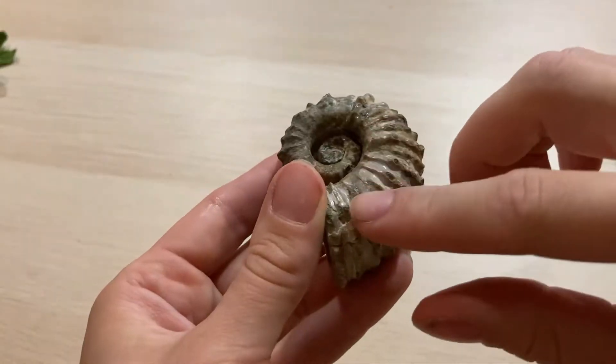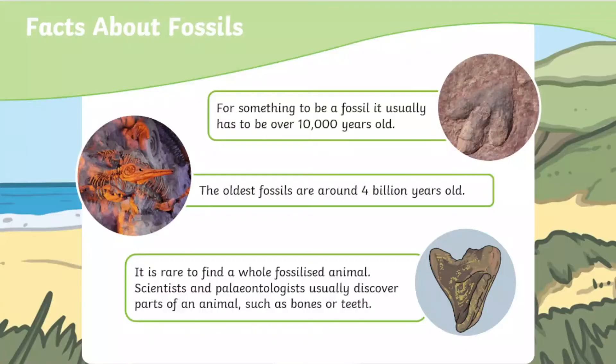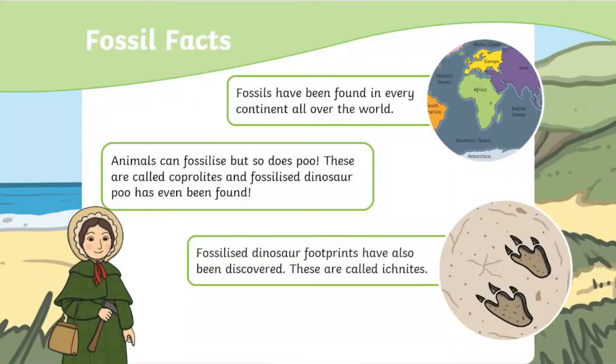Welcome to STEM Club and this very special STEM Club all about fossils. Fossils are an amazing way to learn about what used to live on our planet. A fossil is made from the remains or an imprint of a prehistoric animal or plant that has been preserved, and you can find all sorts of different fossils. This includes dinosaur bones, dinosaur footprints, and even dinosaur poo.